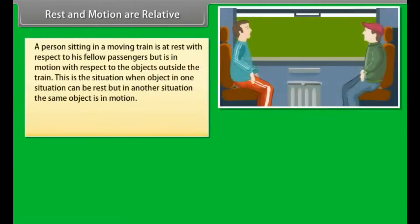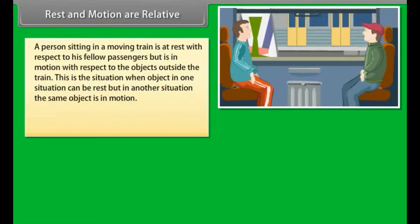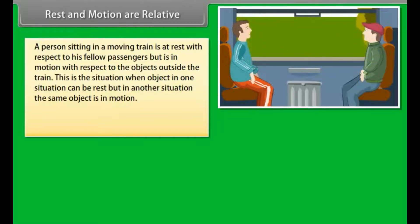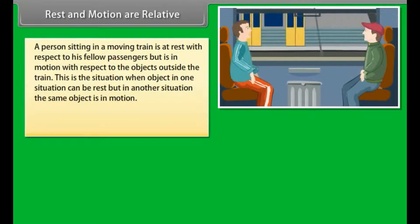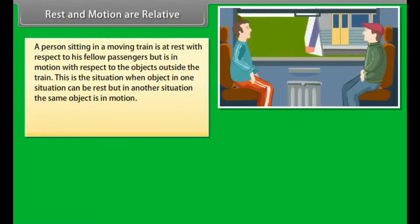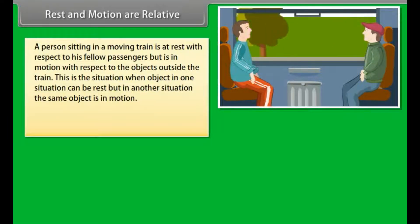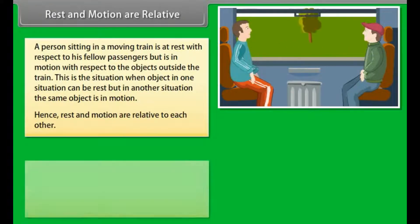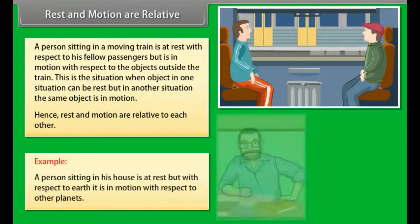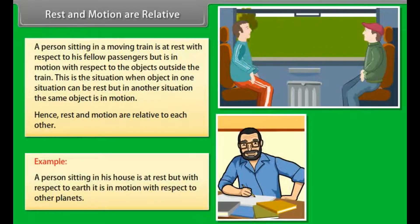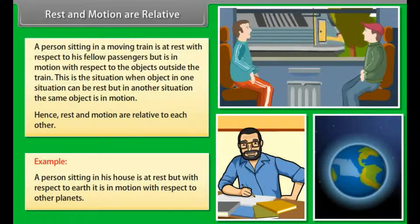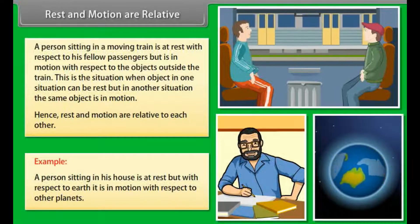A person sitting in a moving train is at rest with respect to his fellow passengers but is in motion with respect to the objects outside the train. This is the situation when object in one situation can be at rest but in another situation the same object is in motion. Hence, rest and motion are relative to each other. Example: A person sitting in his house is at rest but with respect to earth it is in motion with respect to other planets.